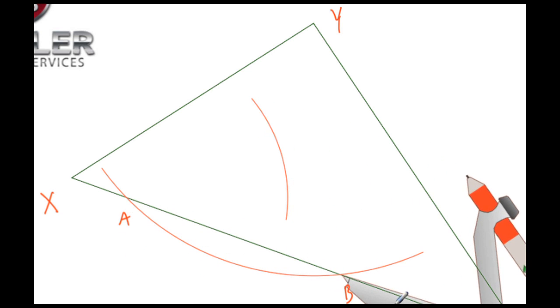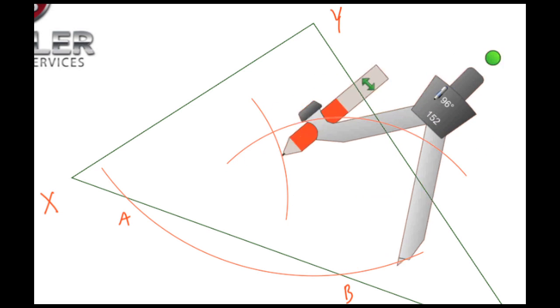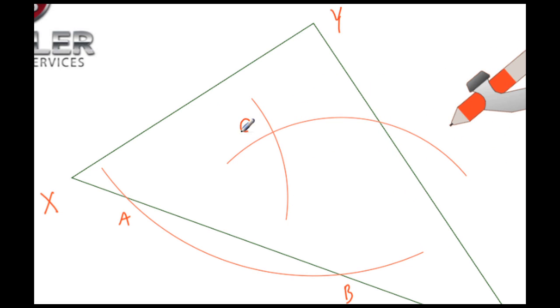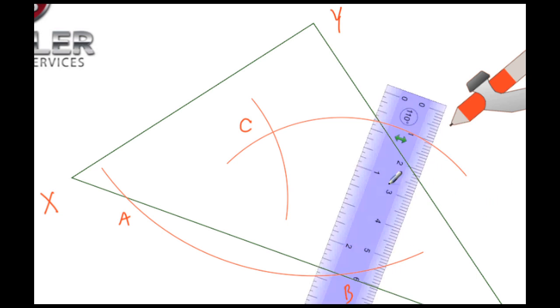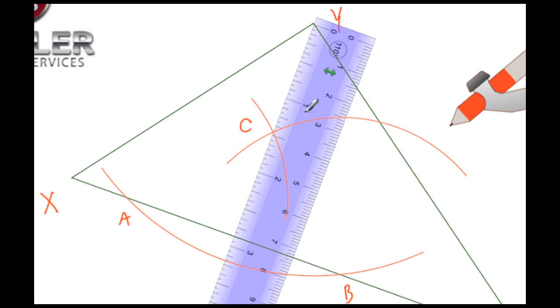Without changing the radius, let's move this compass to point B or intersection B, and again we're going to draw an arc. These two arcs intersect; let's call that intersection point C. Then we need to take our straight edge and go from vertex Y through point C.